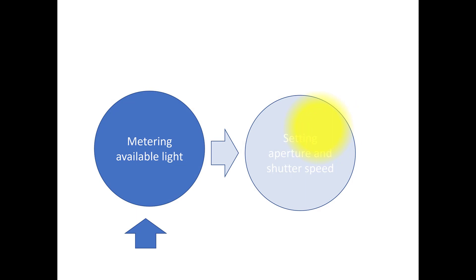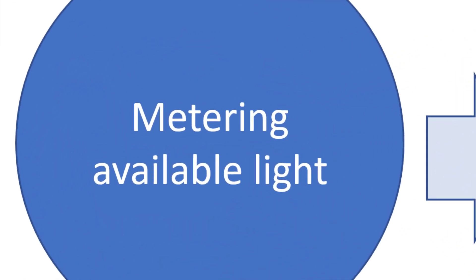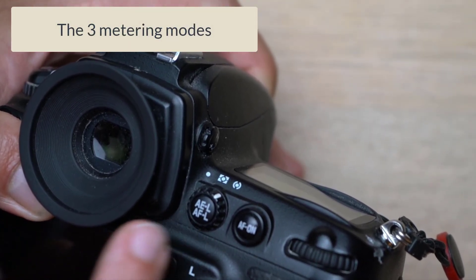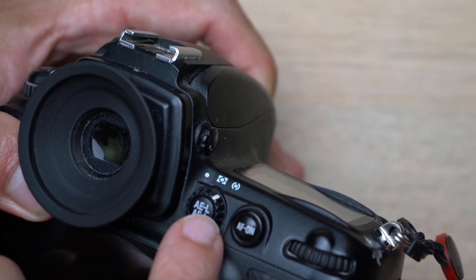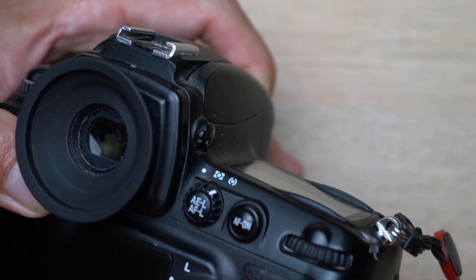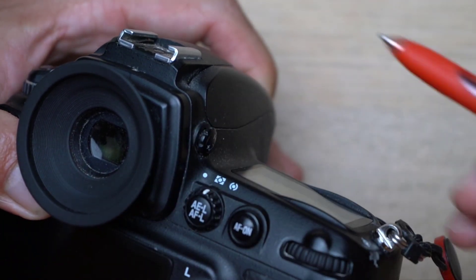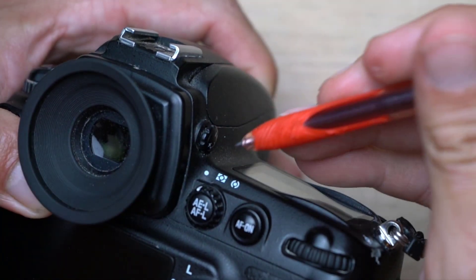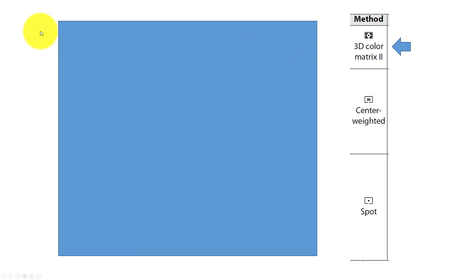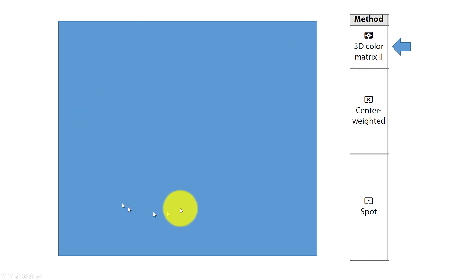Let's start with the metering of available light — how it's done and how you can influence the way it works. You can control the way your meter works using the dial right next to your viewfinder. It has three modes. The first mode — 3D color matrix metering — looks at the entire scene and tries to figure out a good exposure. If there's something very bright or very dark, it finds a good balance. The engineers may have lost the naming debate with marketing, but it essentially provides a good average across different factors in the entire scene.